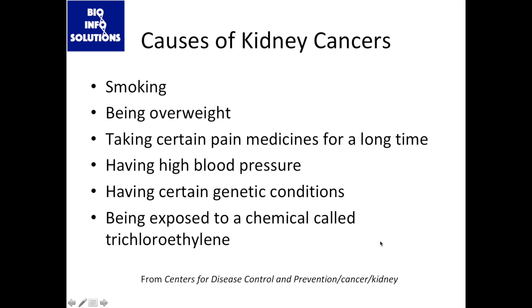Here are some of the causes of kidney cancer, one of the main ones being smoking. Also being overweight, taking certain pain medications for a long time, or having high blood pressure. Having certain genetic conditions — certain methylation patterns or mutations in particular genes — will make you more prone to this particular type of cancer. Also being exposed to a chemical called trichloroethylene, which was recently used to remove grease from metals. It was actually used as an inhaled anesthetic prior to 1960, so people were actually using a carcinogen to knock people out. They don't use that anymore — halothane replaced this chemical, and anyone that works with mice or rats that you need to knock out is probably using halothane.